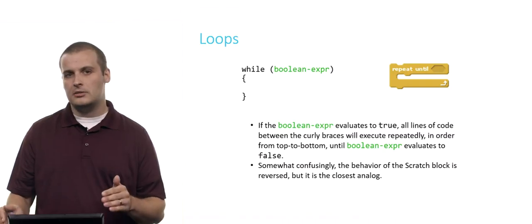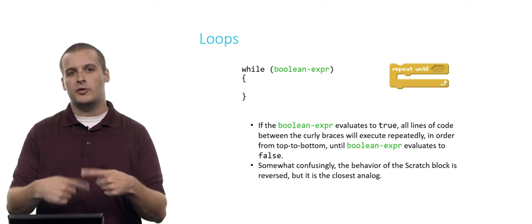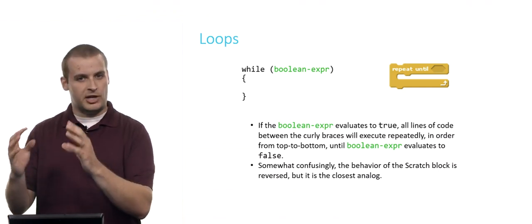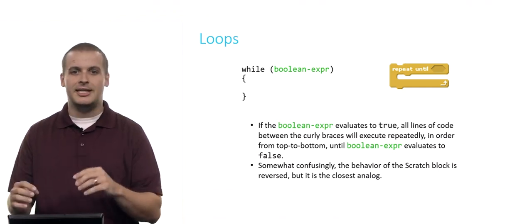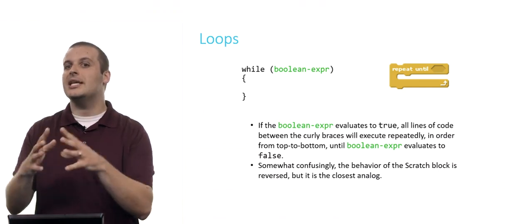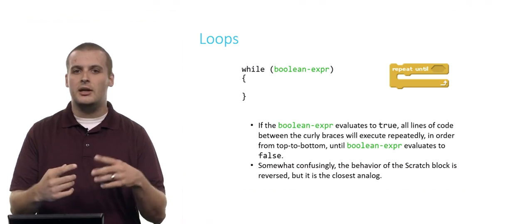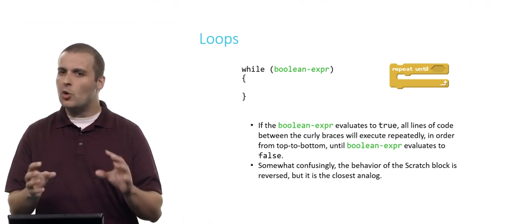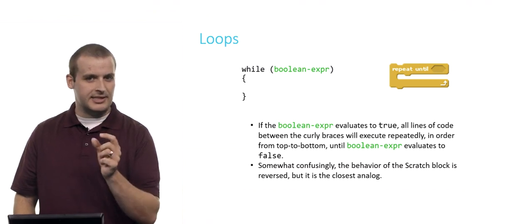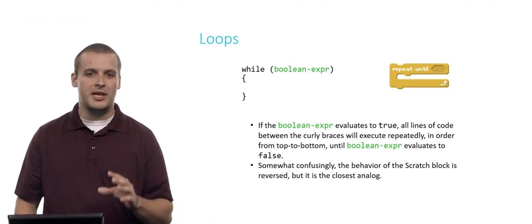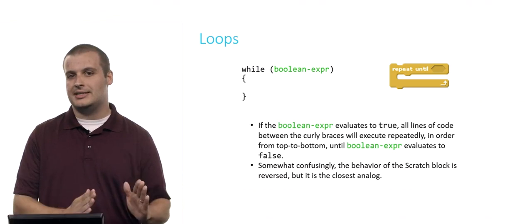Now, somewhat confusingly, the behavior of the Scratch block is reversed. So be really careful if this is your first foray into using loops. Basically, the repeat until block in Scratch will repeat something over and over until the Boolean expression in the hexagon is true. So it will keep doing it until it is true. Meanwhile, the while loop will continue to do it until it is false. So they're quite similar, but there's that little distinction just to be careful of, especially as you make your first foray from transitioning from Scratch into C.